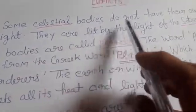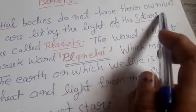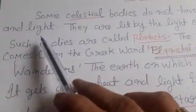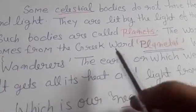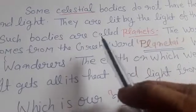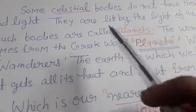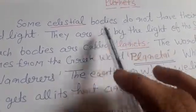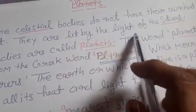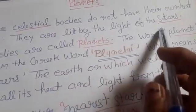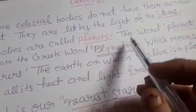Some celestial bodies do not have their own heat and light. You can easily note down in your notebook. आप इसको note कर सकते हैं कि planet किसे बोलते हैं. They are lit by the light of the stars. Such bodies are called planets.